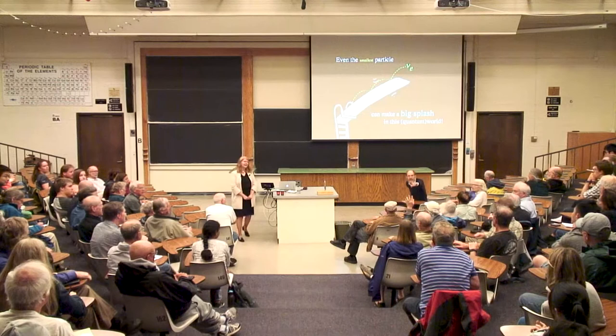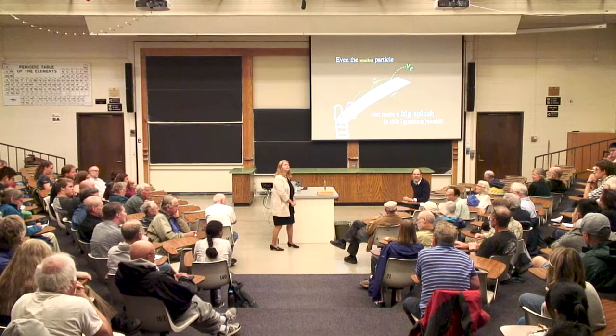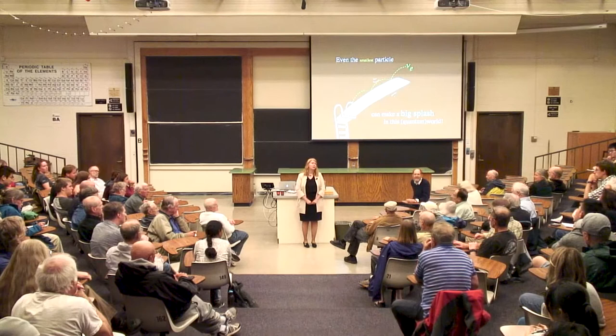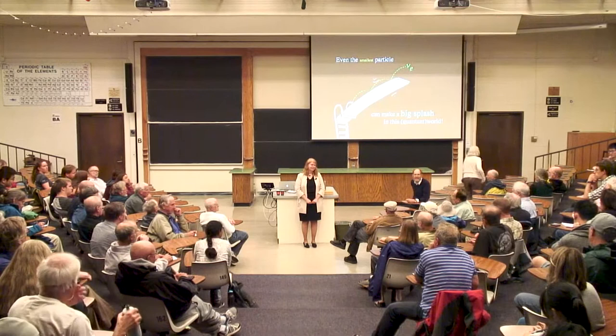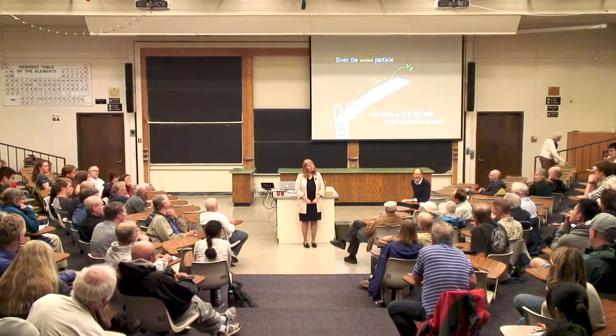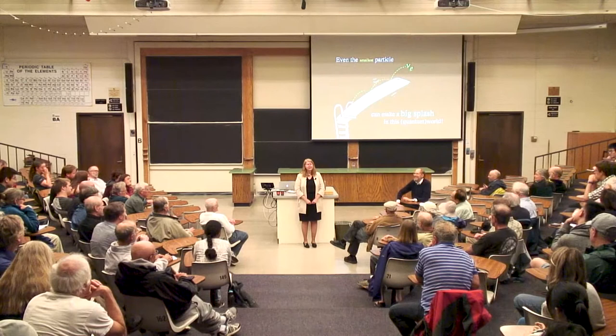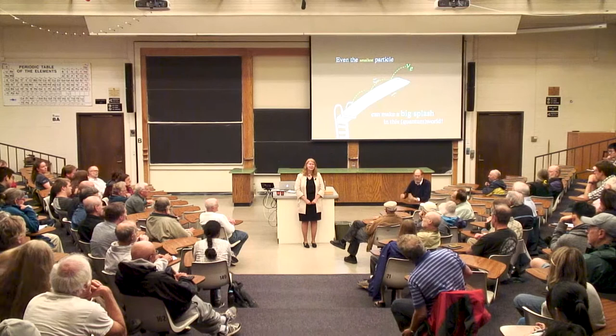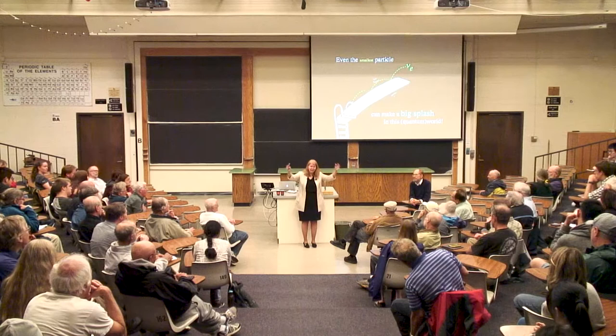Question: On an earlier slide you had 10 to the 9th neutrinos going past. A billion neutrinos in every cubic meter of space — every second? Answer: No, they're flying all around, so that's an instantaneous average. Doesn't that mean it's impossible to ever get a vacuum, because you'll always have neutrinos going through it? These particles are very, very tiny, so there's a lot of space between these neutrinos — they're effectively point-like particles. A billion actually sounds like a lot, but in a cubic meter there's a lot of space.